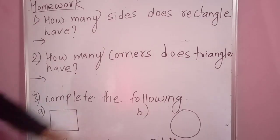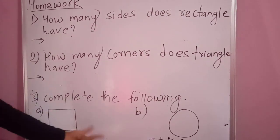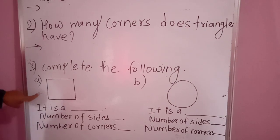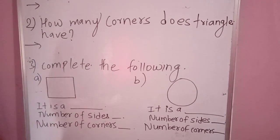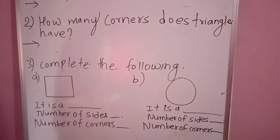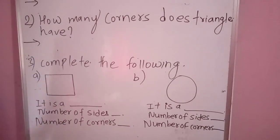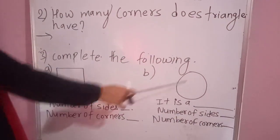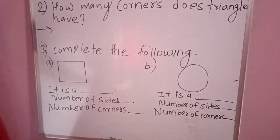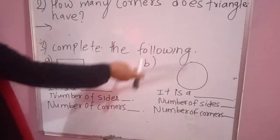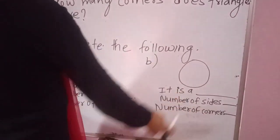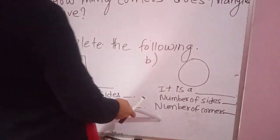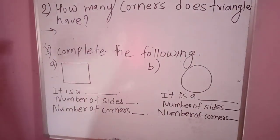Complete the following — you have to fill in the blanks. The first figure is a square — you have to identify the figure and write: it is a square. Write the spelling. Number of sides: four sides. Number of corners: four corners. The second figure is a circle — you have to write: it is a circle. Number of sides: zero, because there are no line segments. Number of corners: zero, because there is no place where two line segments meet.